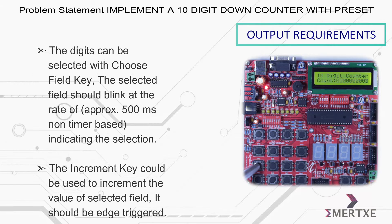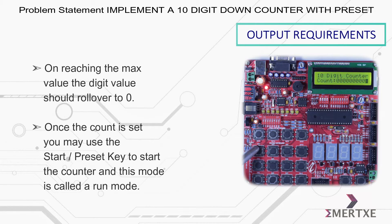The digits can be selected with the choose field key. The selected field should blink to indicate the selection. The increment key can be used to increment the value of the selected field — it should be edge triggered. On reaching the maximum value, the digit should roll over to zero. Once the count is set, you may use the start or preset key to start the counter; this mode is called run mode.